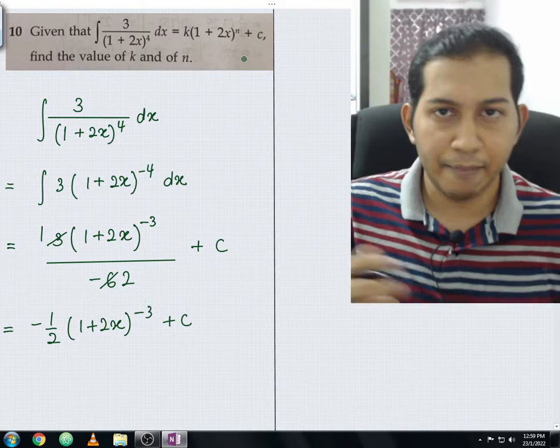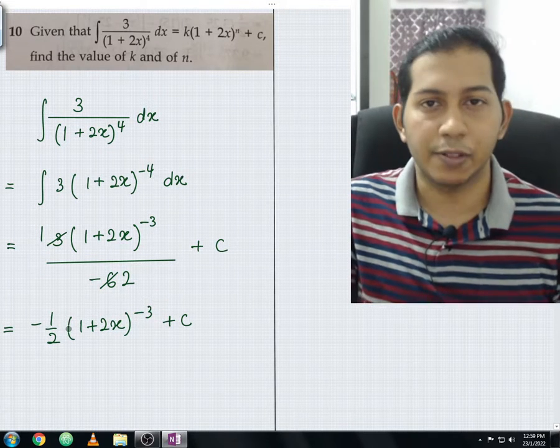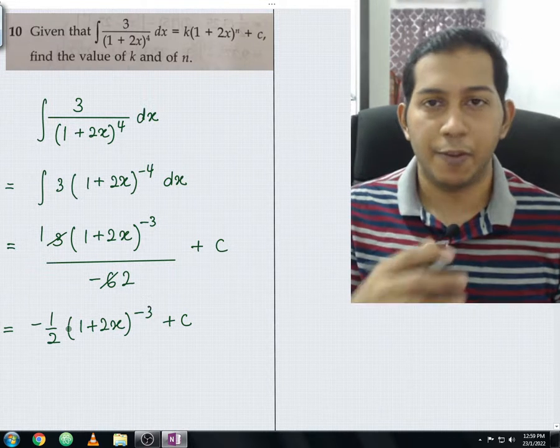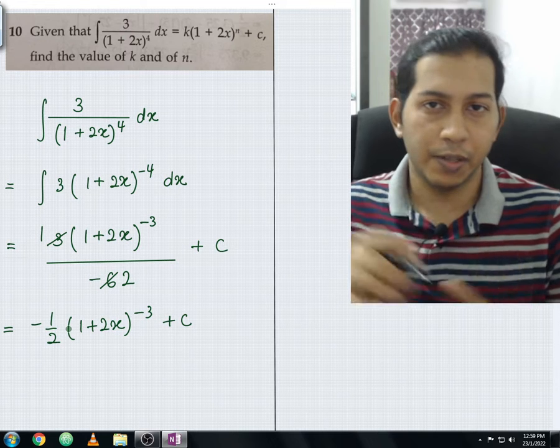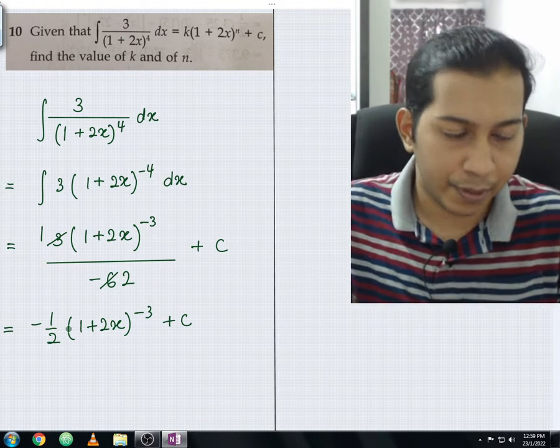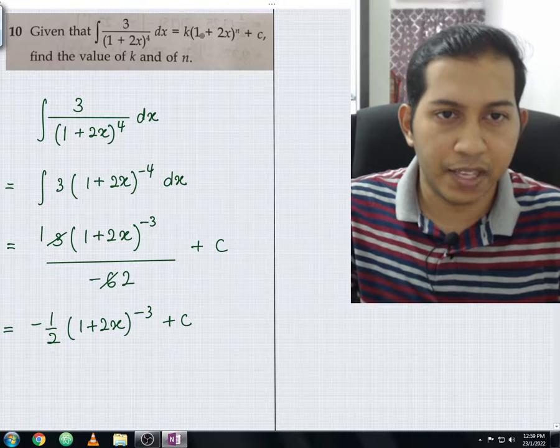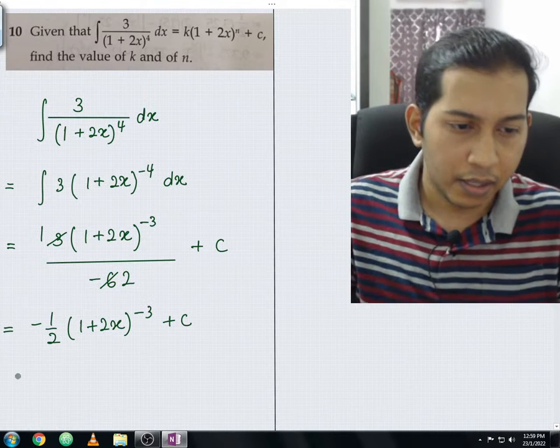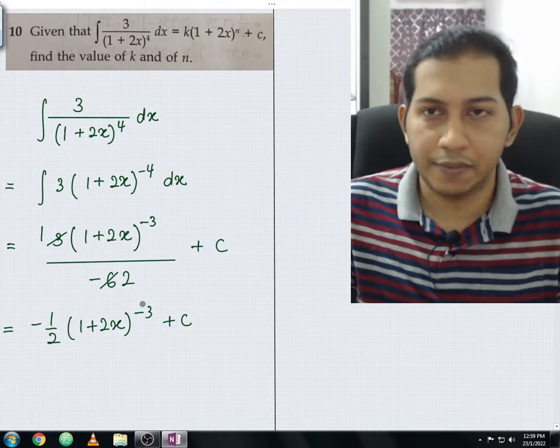Like I mentioned in the previous example, you can put this expression in the middle and also at the numerator. By the way, if you haven't watched the previous example, please click on the link above and watch those videos for better understanding. When you compare this expression with the given expression by the question, you should be getting k equals negative 1 over 2 and n equals negative 3.